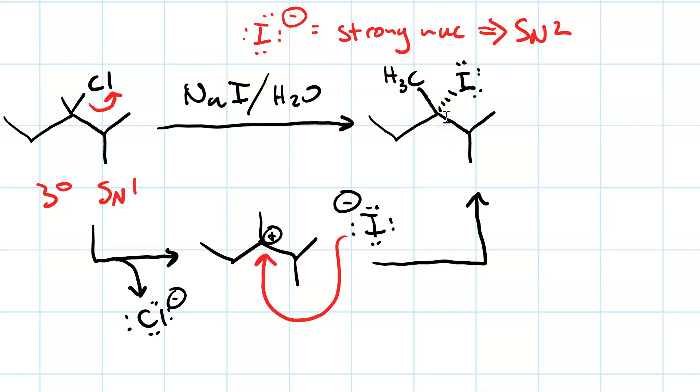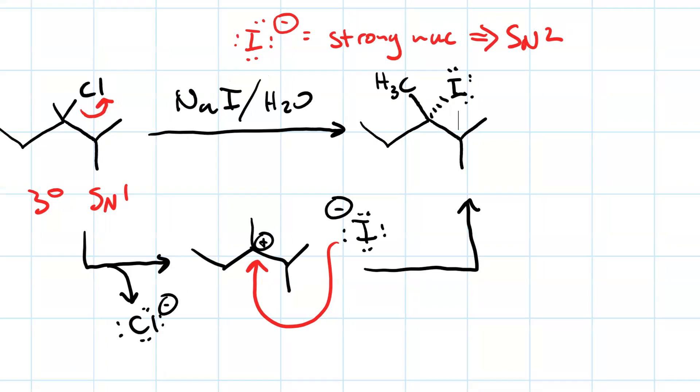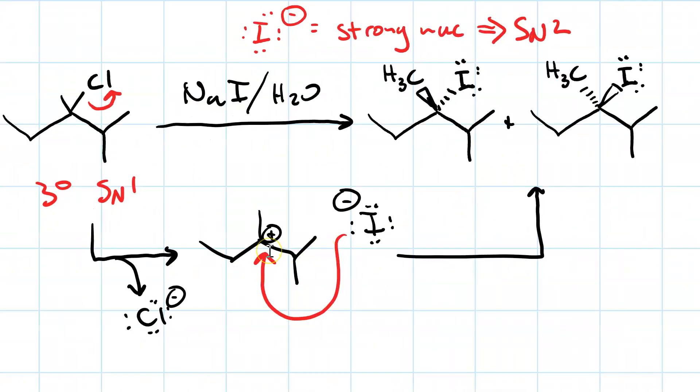This is the one where the iodide attacked from below the plane, so it added on a dash. But because this carbocation is completely planar, the iodide can just as easily attack from the top to give you this enantiomer. You get a racemic mixture of substitution products in SN1.